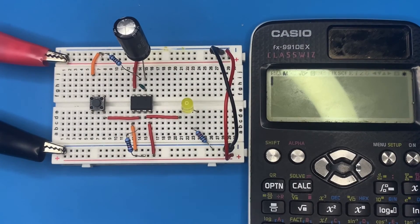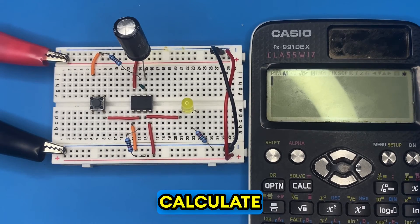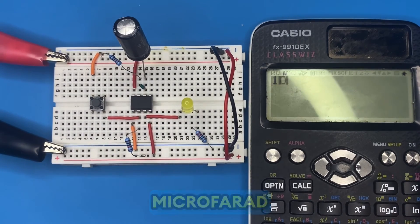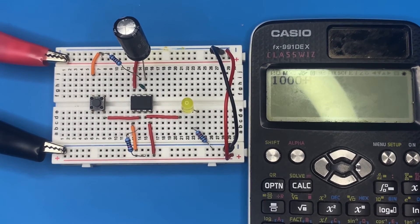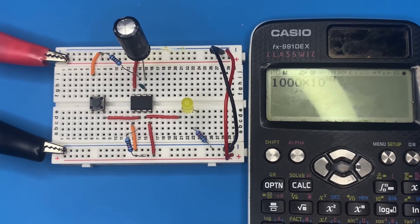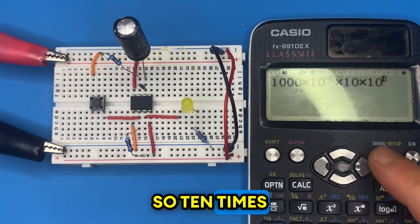The idea was correct. LED is staying on longer than before. We can also calculate the RC time constant. So we are using 1000 microfarad capacitor multiplied by the resistor value which is 10 kilo ohm, so 10 times 10 to the power of 3.